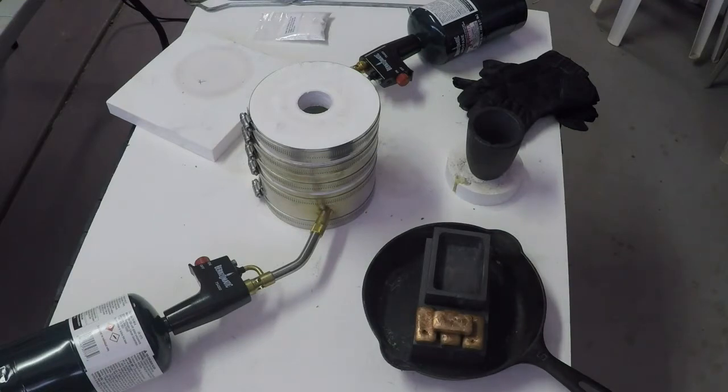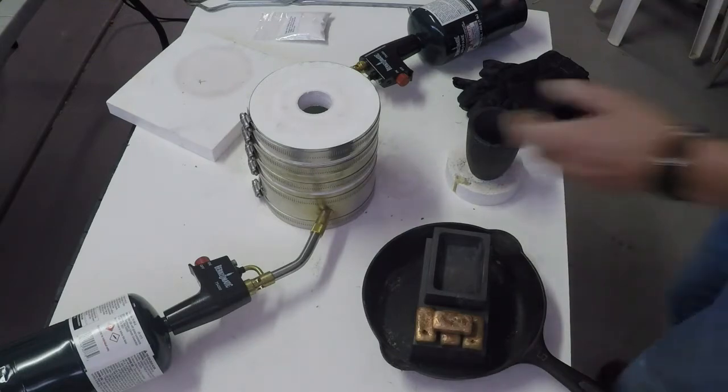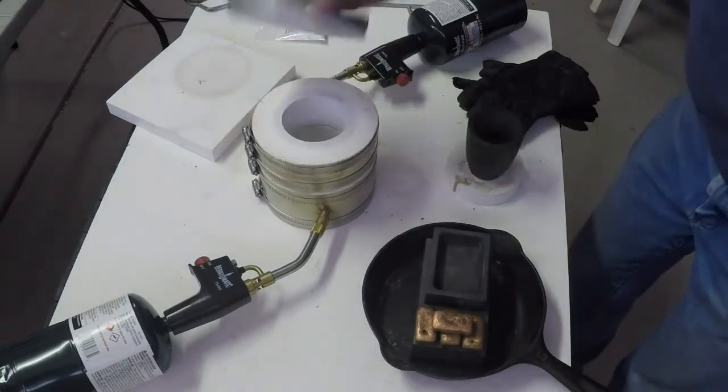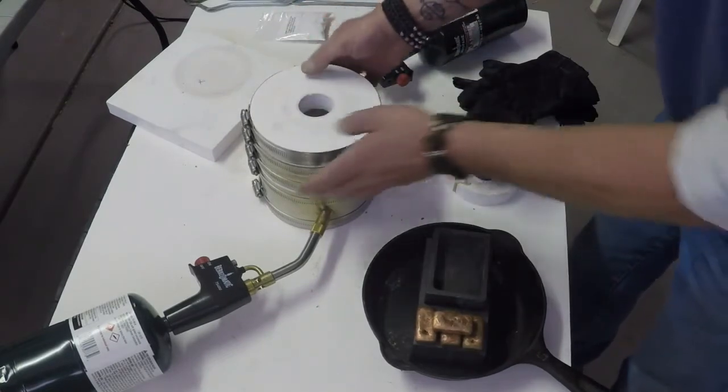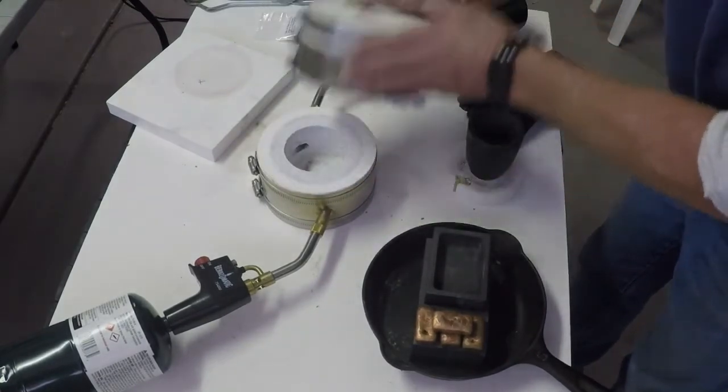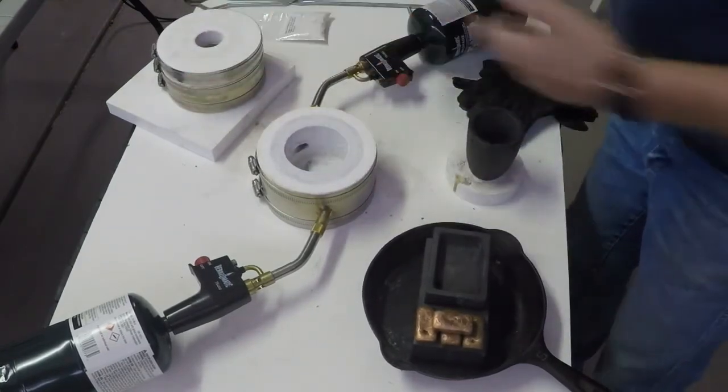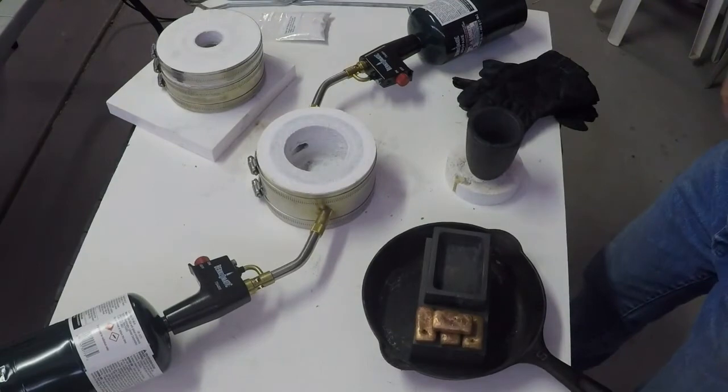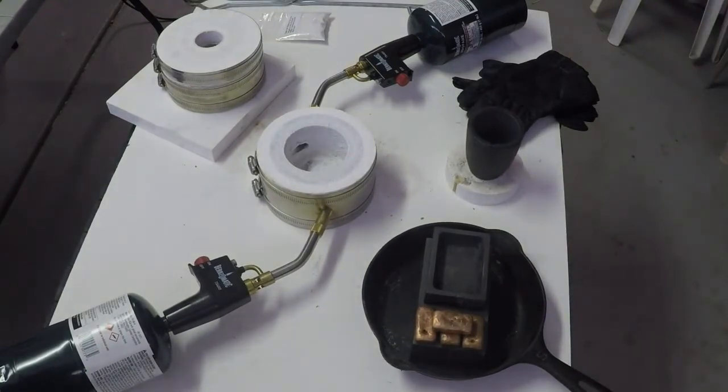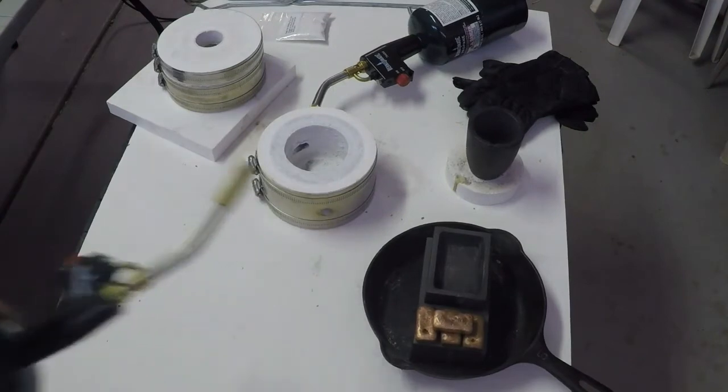The TS-4000 torch has an automatic lighter that only works part of the time. The little KK-6 comes apart in three pieces like the KK-8, which makes it very convenient for reaching in and getting your crucible out. Let's light this torch over here first.